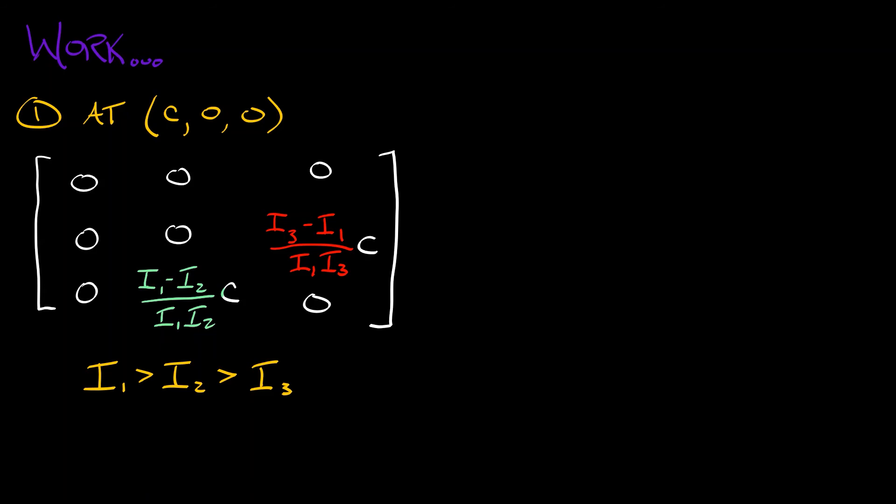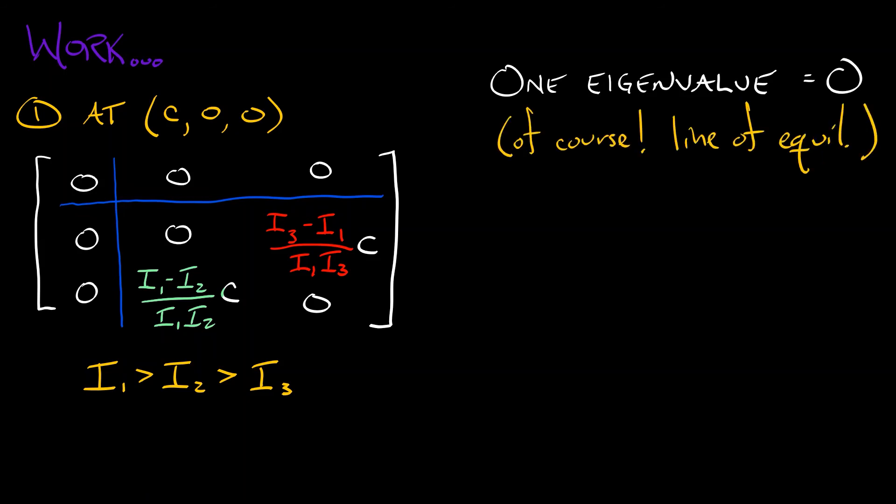We could compute the eigenvalues at this point, but we really don't need to. This has a block diagonal structure. So clearly one of those eigenvalues is equal to zero. And of course that makes sense. Why? Because we have a line of equilibria. So along the x-axis, the eigenvector for this zero eigenvalue, you have a line of equilibria. Of course you're going to have a zero eigenvalue there.